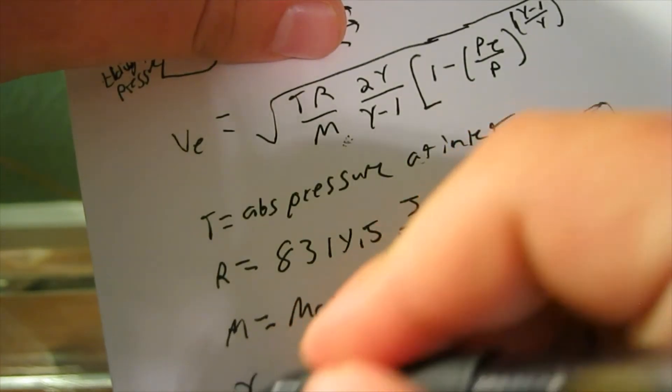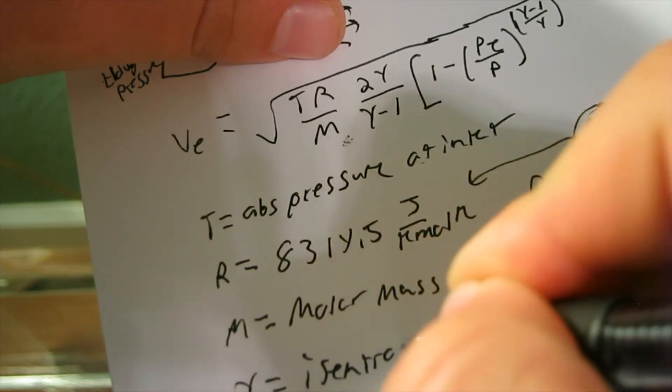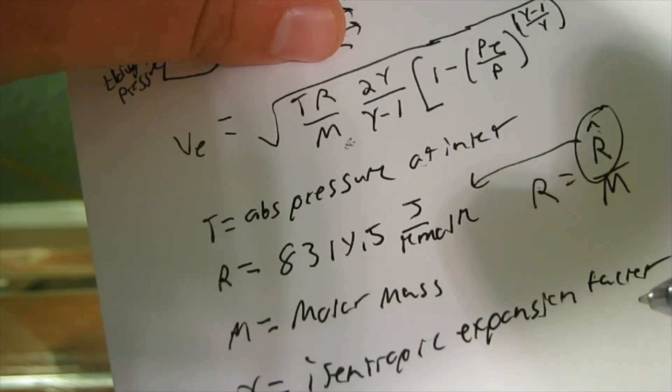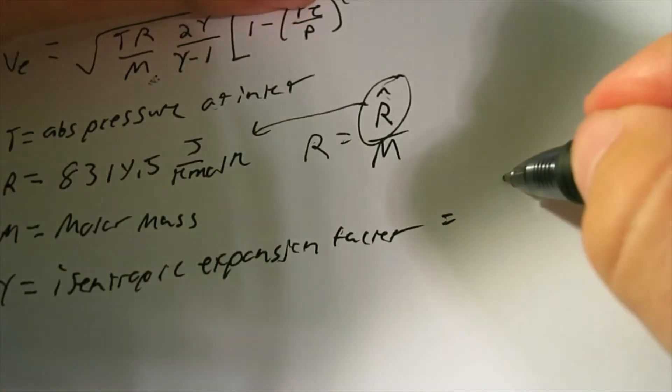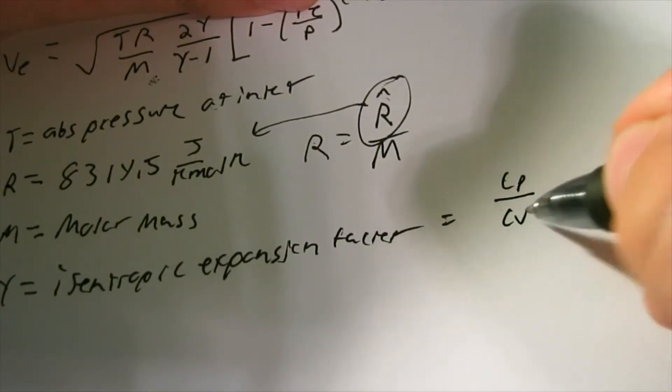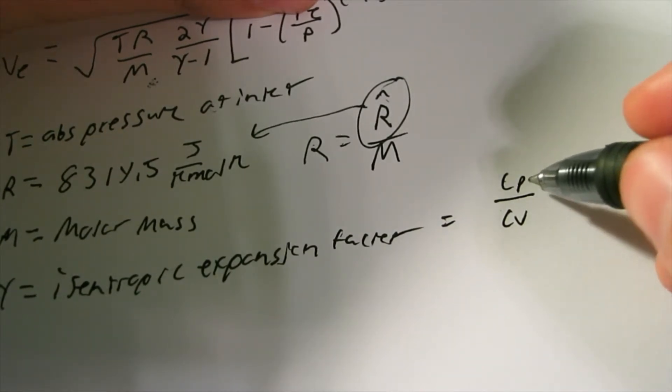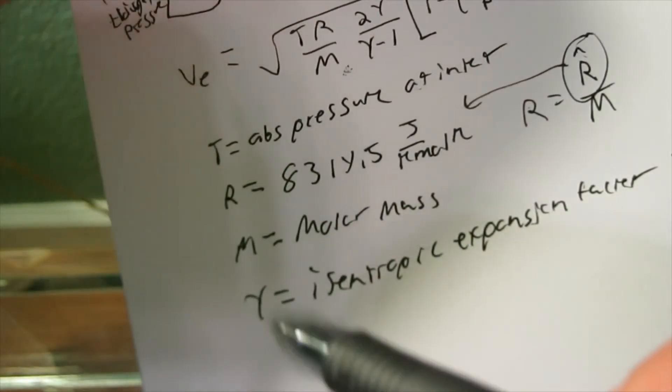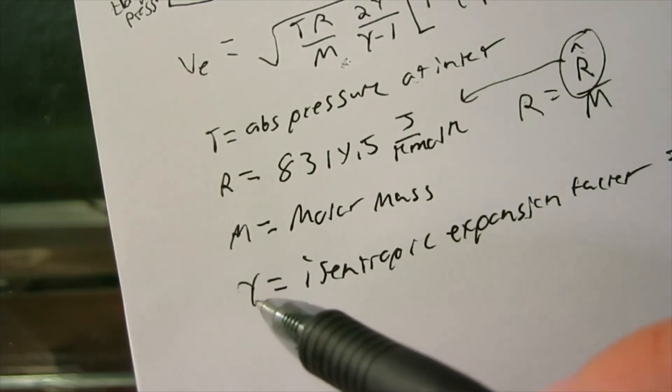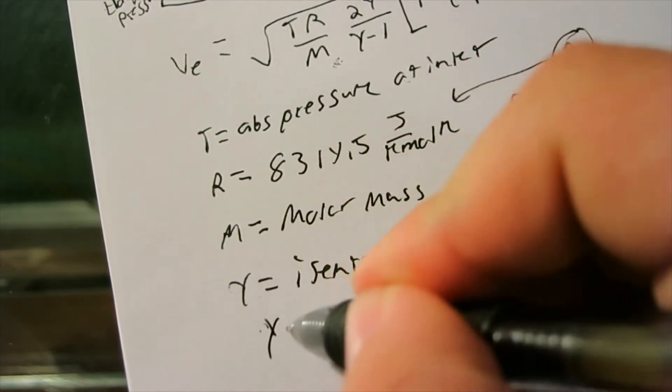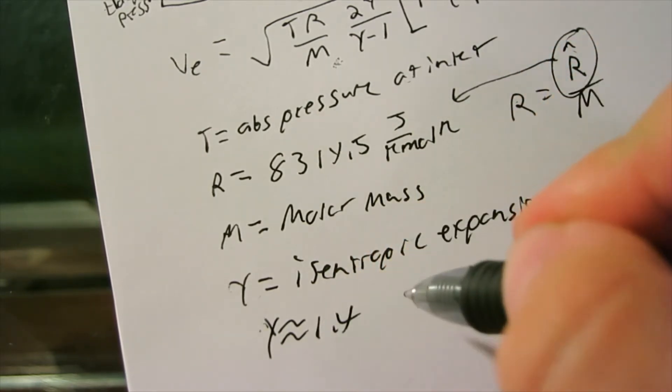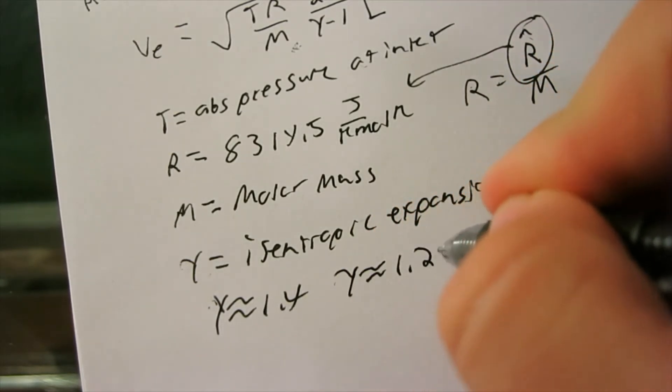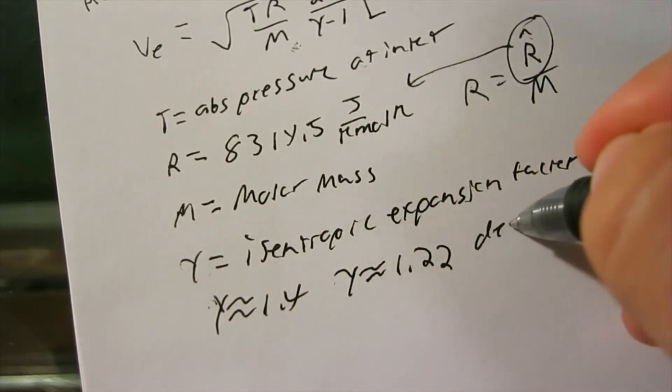The gamma equals the isentropic expansion factor, which is Cp over Cv. This is the specific heat capacity at constant pressure over constant volume. And this changes depending on what kind of gas you're using. Air is approximately 1.4. Some other gases you'll see in a question, it's approximately 1.22. It just varies depending on what gas you're using.